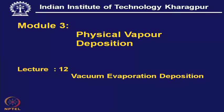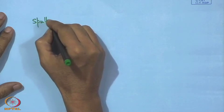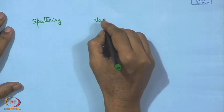Deposition by vacuum evaporation. We have various types of deposition - physical vapor deposition and chemical vapor deposition. In physical vapor deposition, it can be broadly classified into sputtering and vacuum evaporation.